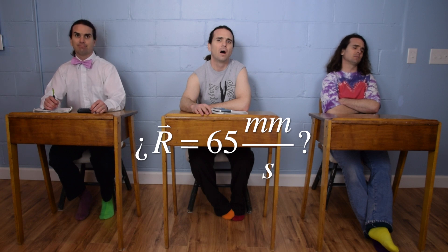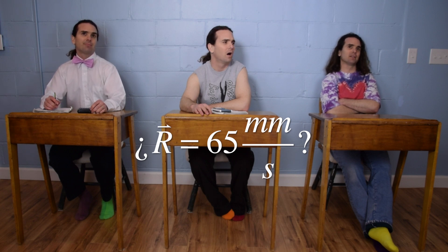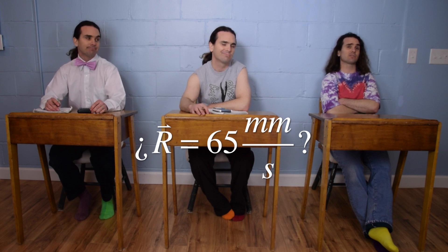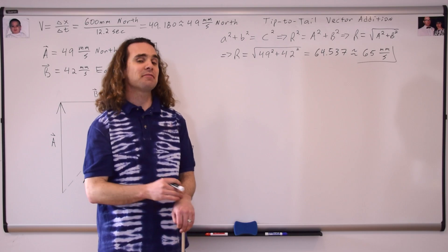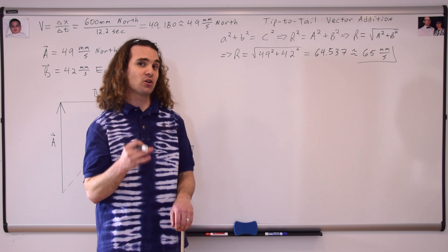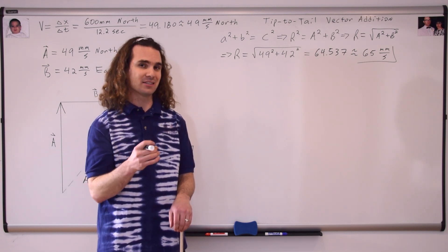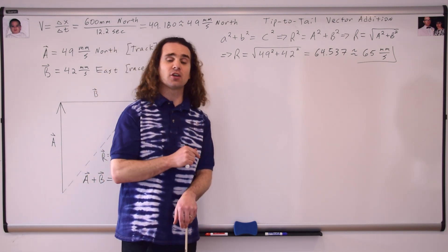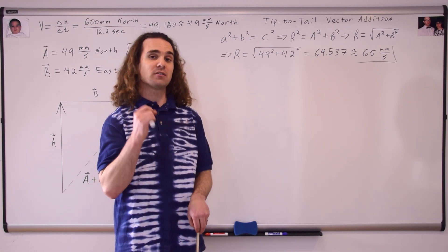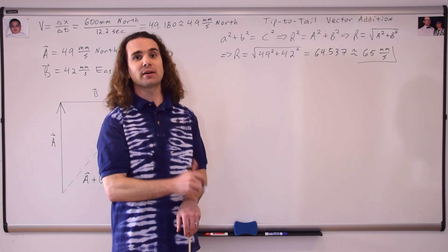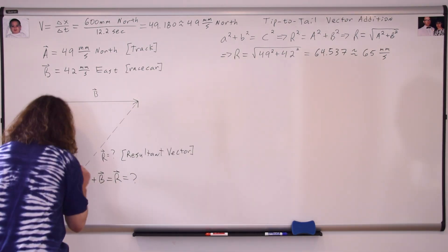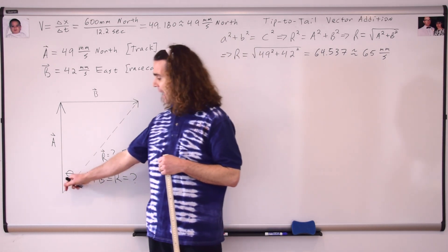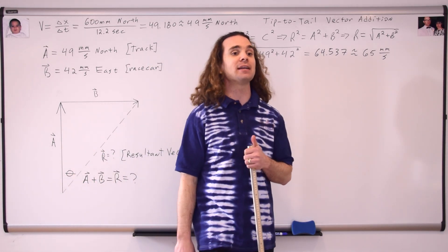Vectors have both magnitude and direction. Velocity is a vector, so we need to figure out slow velocity racer's direction as well. We have figured out the magnitude of slow velocity racer's resultant velocity; however, we also need to figure out the direction in order to complete the resultant velocity vector. How are we going to figure out the direction — in other words, how are we going to figure out this angle theta?